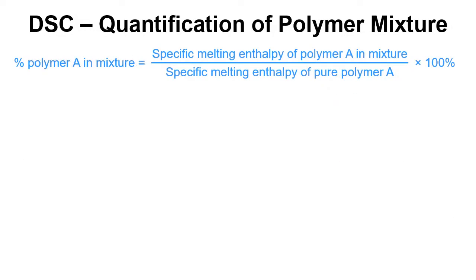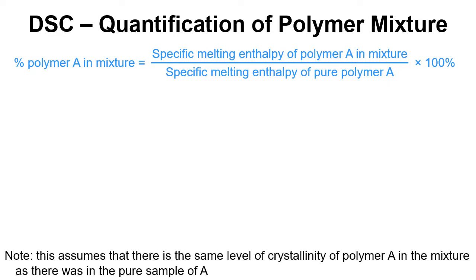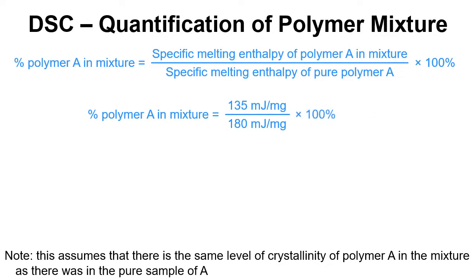To do the quantification, we take the specific melting enthalpy of polymer A in the mixture, divide that by the specific melting enthalpy of the pure polymer, and multiply by 100%. It's important to note this assumes the same level of crystallinity in polymer A in the mixture as in the pure sample. Putting the numbers in, we get 75% polymer A.